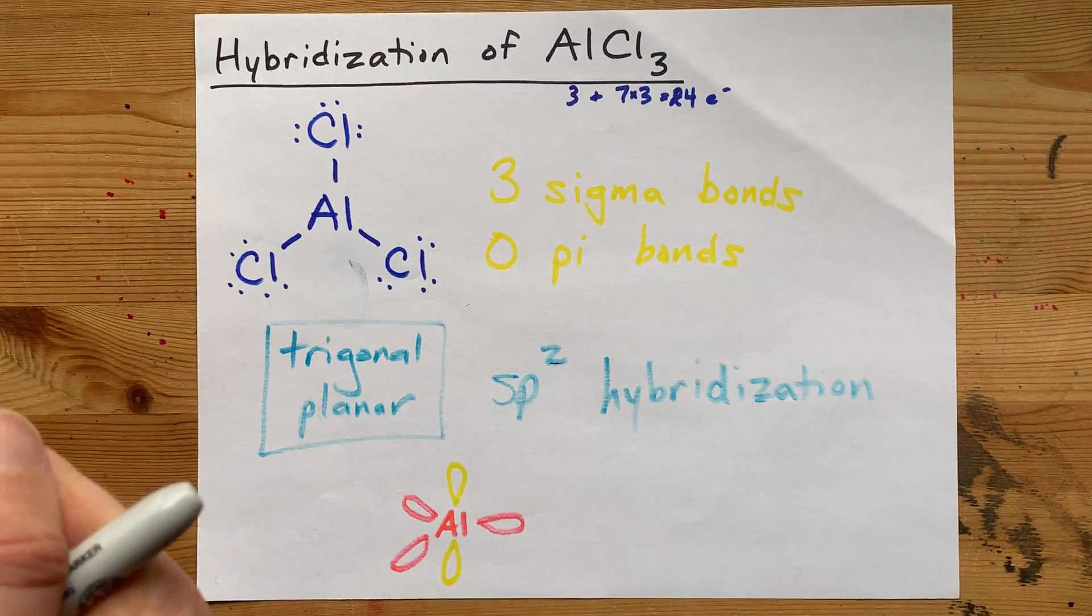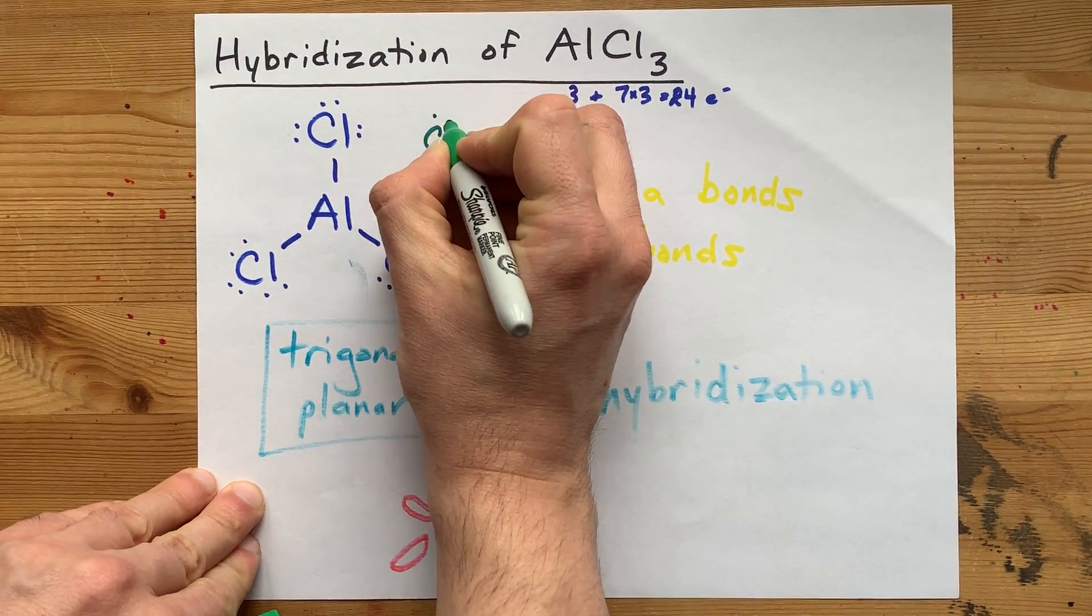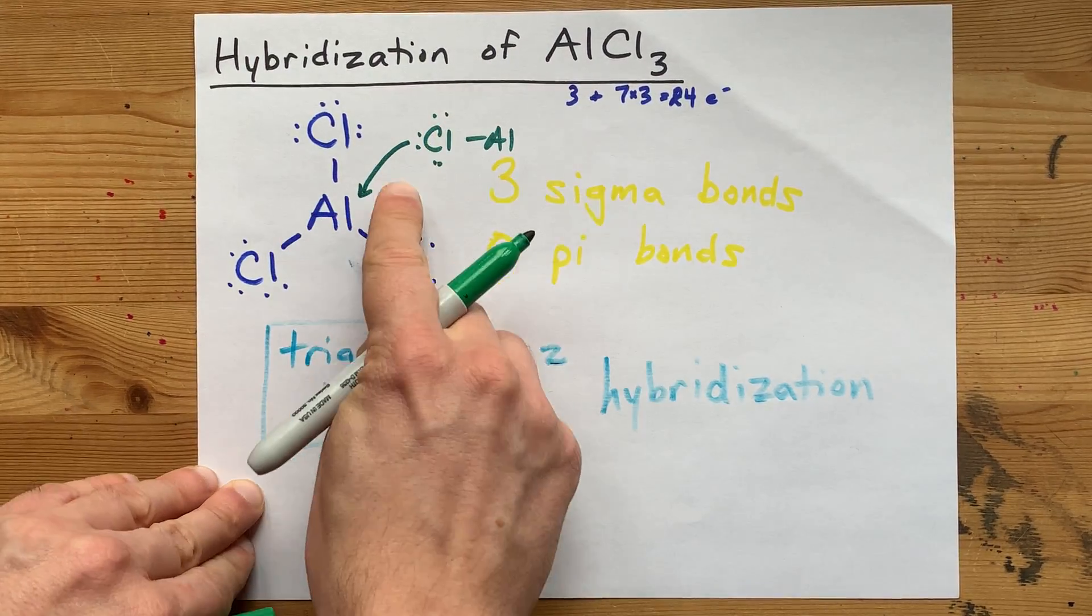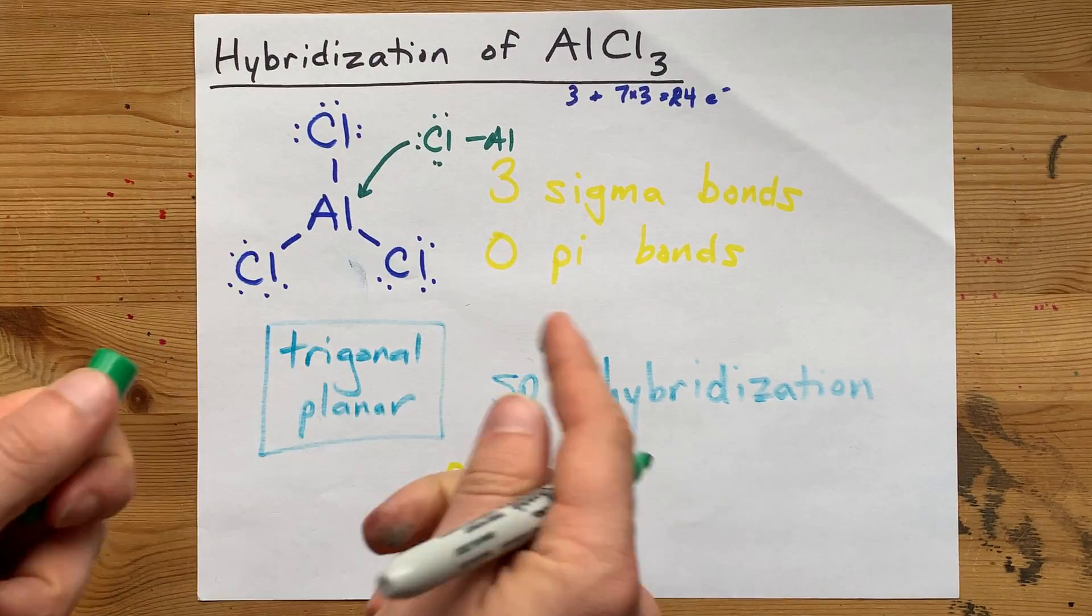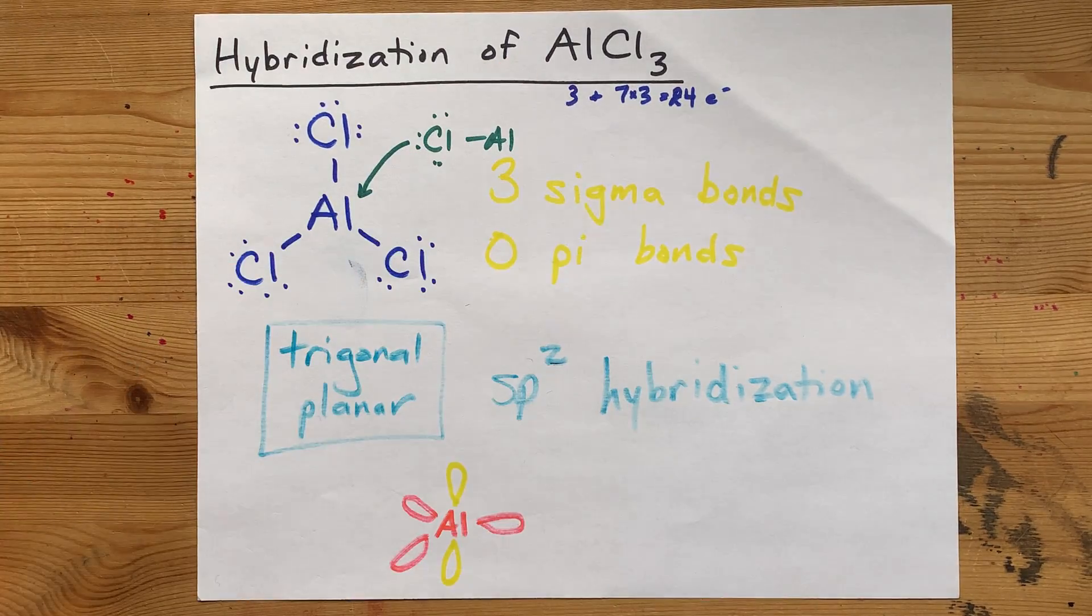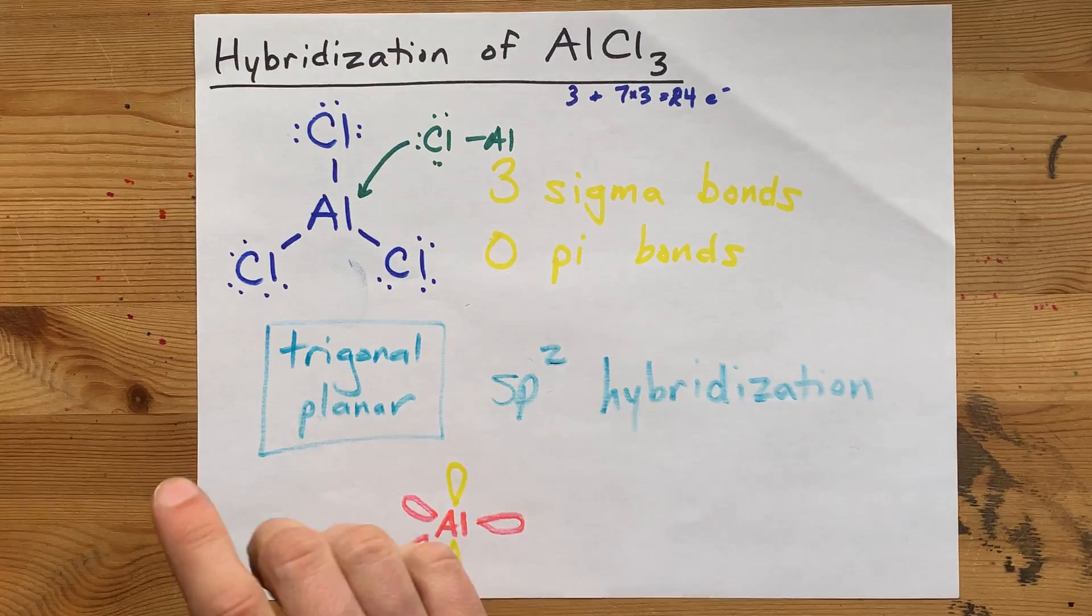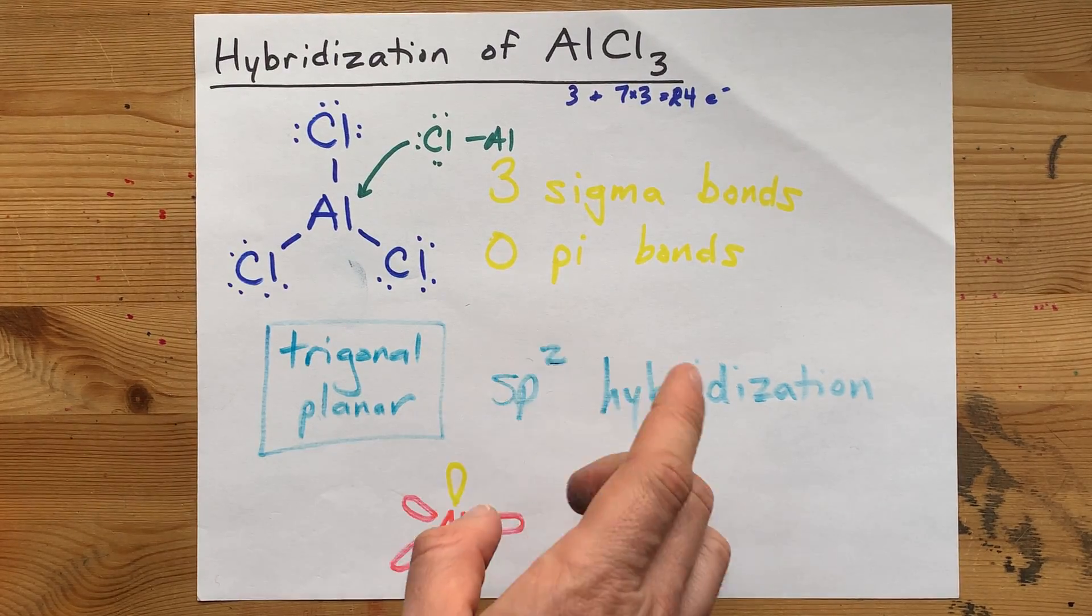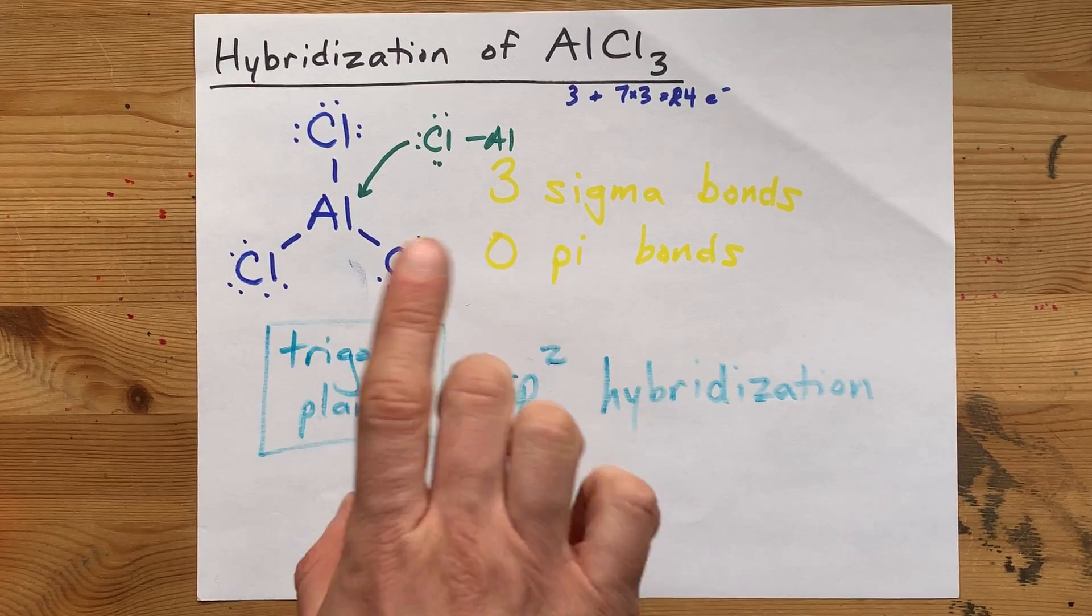Because the lone pair on one chlorine atom from an AlCl3 is coming in to create another sigma bond in here. But you're not being asked that. You were probably just asked for the fact that it's trigonal planar and sp2 hybridized.